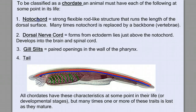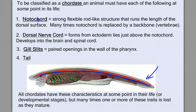And finally, all chordates at some point in their development have a tail. Now, thinking of this and you being a chordate as a human — you don't have a notochord; in humans, the notochord is replaced by vertebrae, a bony backbone. Your dorsal nerve chord is your spinal chord and your brain. You don't have gill slits, but in your embryonic development stages, you had openings in your throat where the gill slits were. And you don't have a tail, but you do have a remnant tailbone. So all chordates have these characteristics at some point in their life or in their developmental stages, but many times one or more of these traits is lost as we mature.